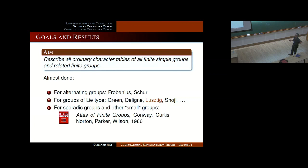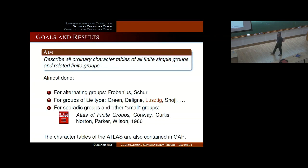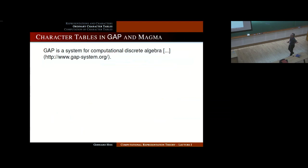This is the book which collects all the character tables for the sporadic simple groups and some other small groups — the famous Atlas, now about 30 years old, but still very timely. All these character tables are contained in GAP and also in Magma, in online versions, so you are able to work with them.